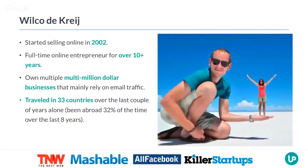My name is Wilco de Krij — I should have introduced myself first. I'm from the Netherlands. I've been selling online since 2002 and I've been doing this full-time for just over 10 years now. I currently own multiple multi-million dollar businesses, and what's important is that all my businesses mainly rely on email traffic.